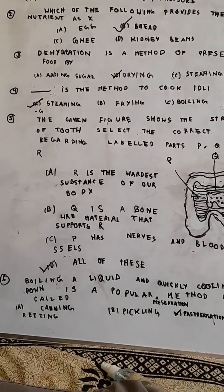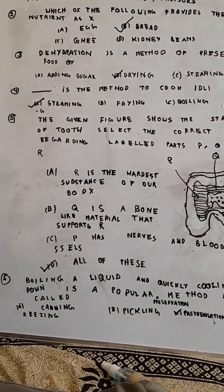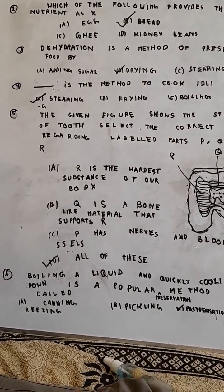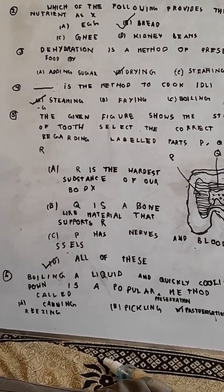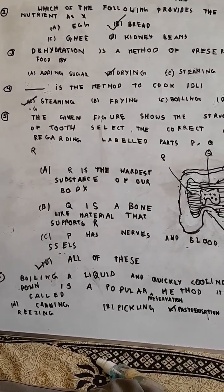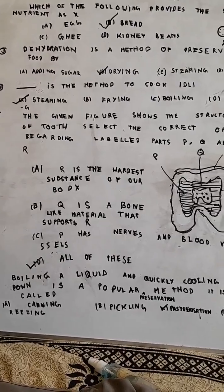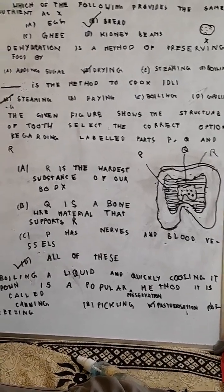Dash is the method to cook idlis. The options are: A, steaming; B, frying; C, boiling; D, grilling. The correct option is option A, steaming.